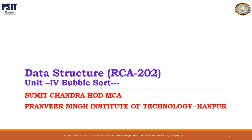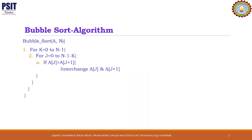Dear students, welcome to the class of Data Structure. In this lecture we are going to study about Bubble Sort. The complexity of Bubble Sort is order of n square. But if we optimize the algorithm, we can achieve complexity of order of n if the array is already sorted. That can be treated as the best case. So let's explore Bubble Sort.